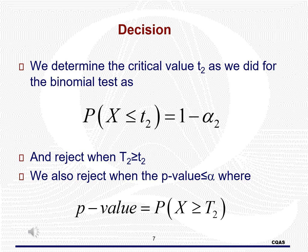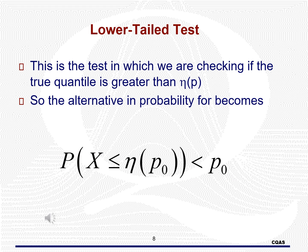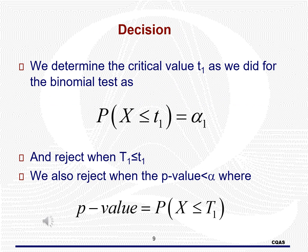The lower-tailed test is where we check to see if the true quantile is greater than the hypothesized value. The probability statement means that the true percentage of values falling below our hypothesized value is actually less than p0, so the true quantile would need to be larger than our hypothesized value. For the lower-tailed test, we first need the lower-tailed critical value T1 and then reject when T1 is less than or equal to the critical value. The p-value is the probability that x is less than or equal to T1 using the binomial distribution with n as sample size and pi equal to p0.